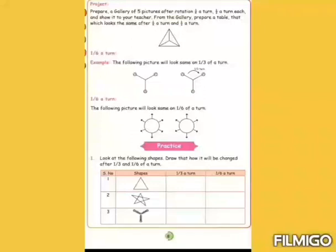Okay students, next we will see 1 by 3 turn, 1 by 6 turn. First example picture has three wings from the center, so you will turn 1 by 3, after you will get the same position. Next example, 1 by 6 turn. You see the 1 by 6 turn of the picture. The center circle has six lines. Now you will rotate the circle, every turn you will get the same picture. Okay, now you will do the practice sums. Practice.